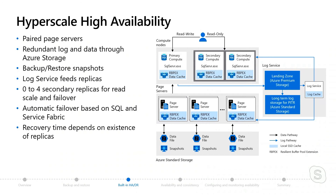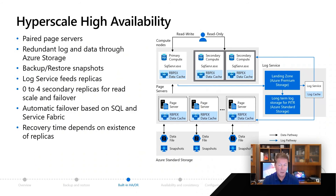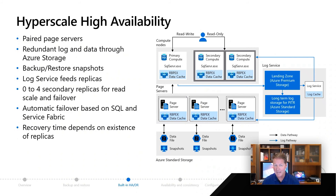Why would we have zero replicas? The data files are on Azure Storage, and we use page servers and local caches for that data. So technically with hyperscale, you don't even need a replica for high availability — because like general purpose, if the primary went down, we could spin up a new node and use our page servers, caches, and data stores from remote storage to bring up the new primary replica. But if you want better performance, we have the ability to go zero to four replicas. Going all the way to four replicas gives you a faster failover experience. It's combining the best of both worlds from general purpose and business critical, giving you maximum performance and scalability.